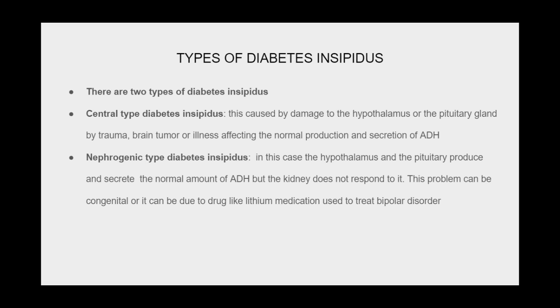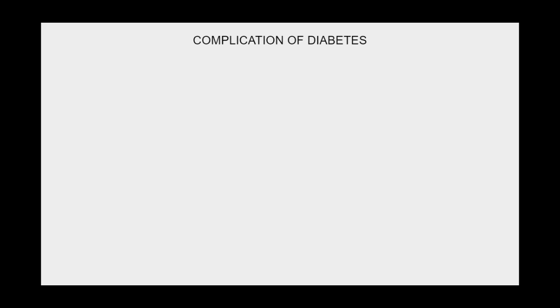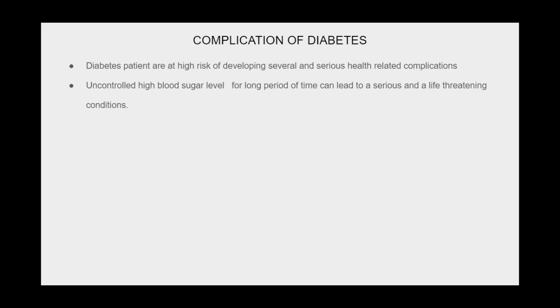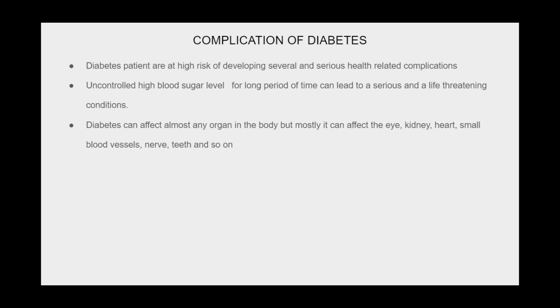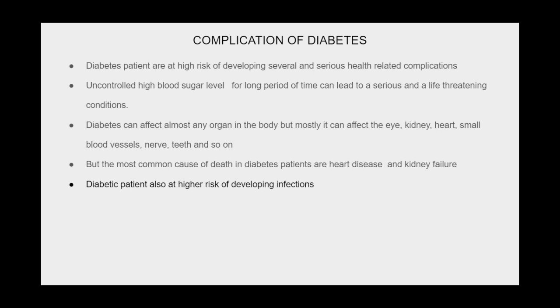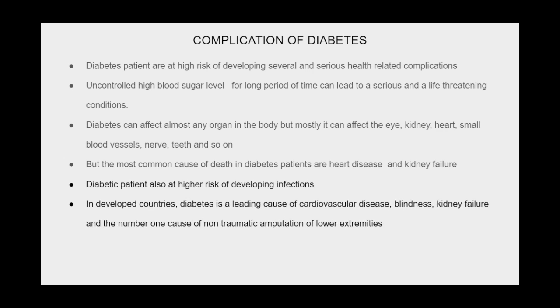Diabetes patients are at high risk of developing several serious health complications. Uncontrolled high blood sugar over a long period of time can lead to serious and life-threatening conditions. Diabetes can affect almost any organ in the body, but most commonly affects the eyes, kidneys, heart, small blood vessels, nerves, and teeth. The most common causes of death in diabetes patients are heart disease and kidney failure. Diabetic patients are also at higher risk of developing infections, and in developed countries diabetes is a leading cause of cardiovascular disease, blindness, kidney failure, and the number one cause of non-traumatic lower extremity amputation.